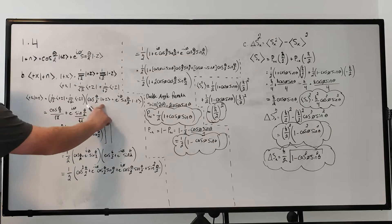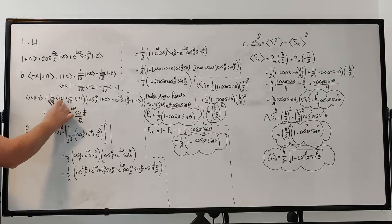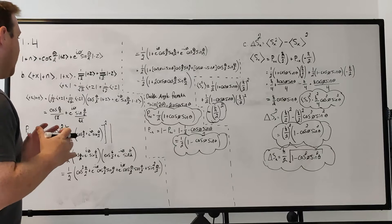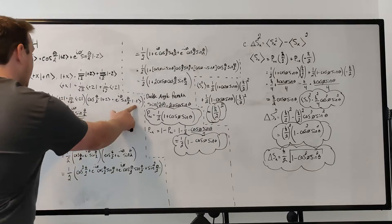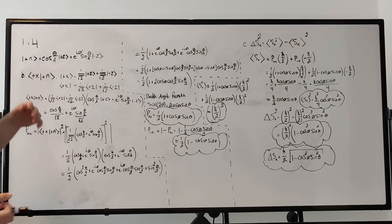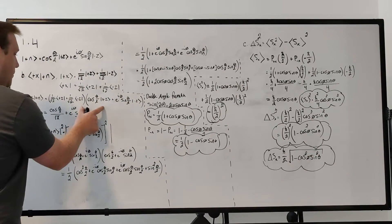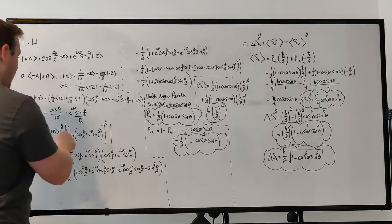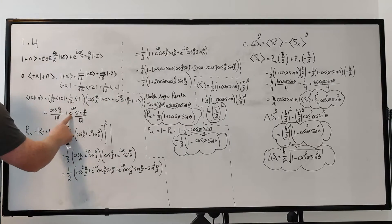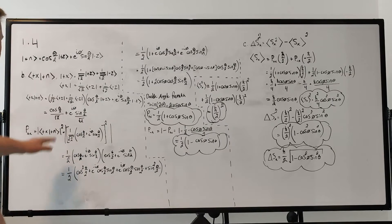Using the FOIL method, you get cosine of theta over 2 over root 2 for the first term. The inner product of the same state gives 1, and the inner product of plus z and minus z gives zero since those basis states are orthogonal to each other. So those cross terms cancel out, and for the last multiplication you get e to the i phi times sine of theta over 2, all over root 2. That is the probability amplitude.